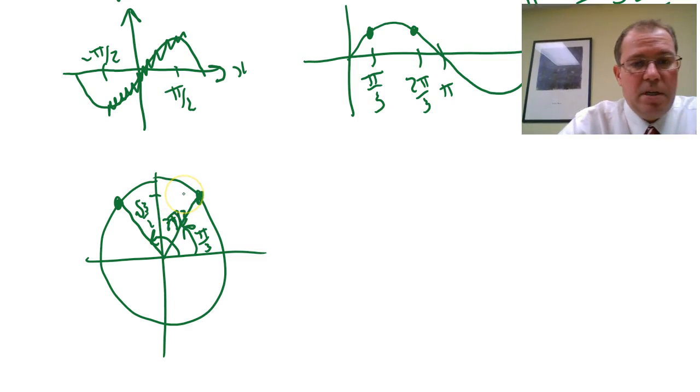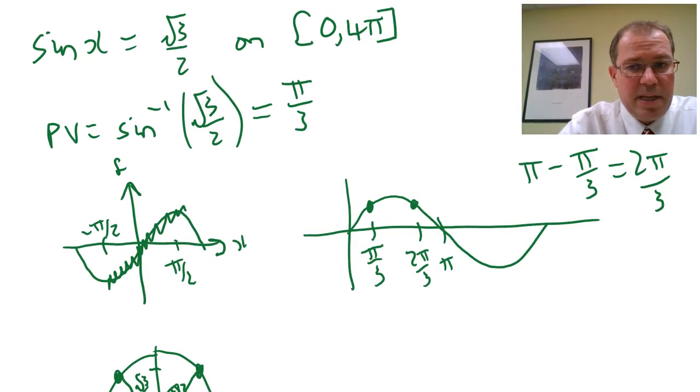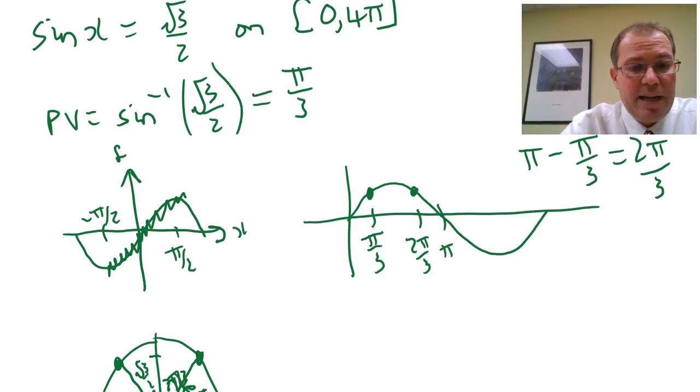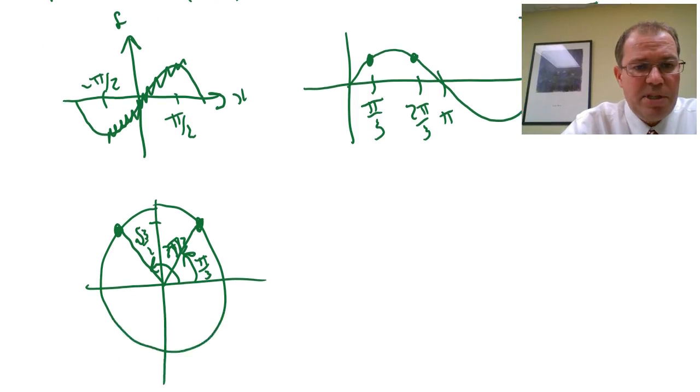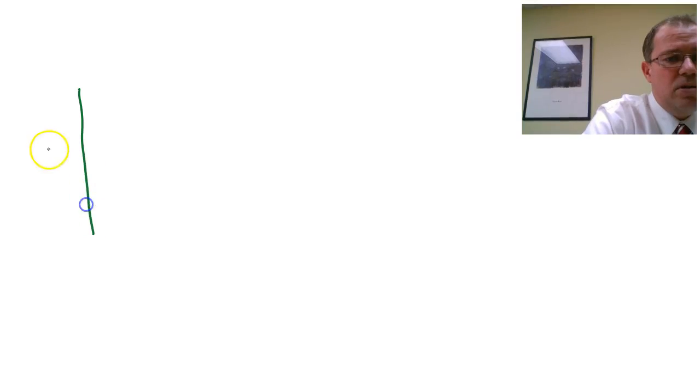So there's two different ways we can think about getting the principal value and the secondary value. Once we've got our principal value and secondary value we can then generate all the other answers.